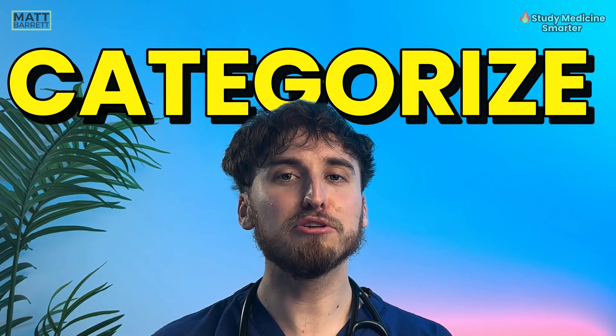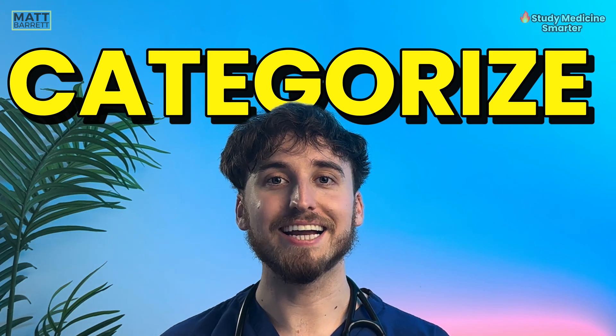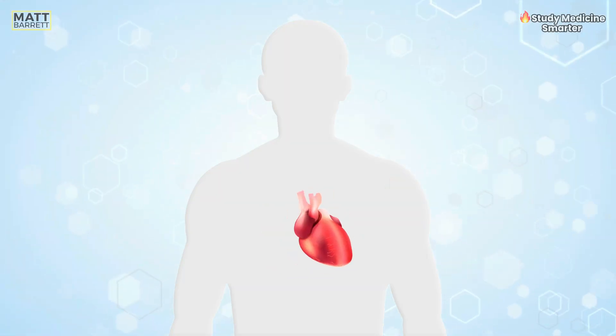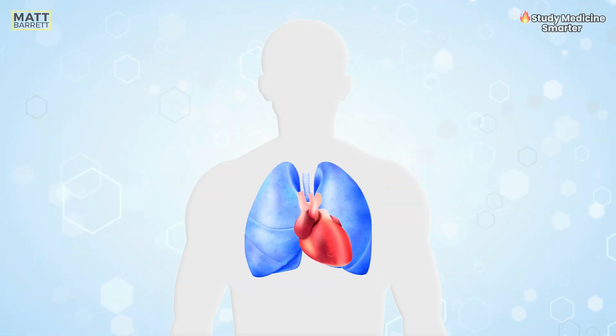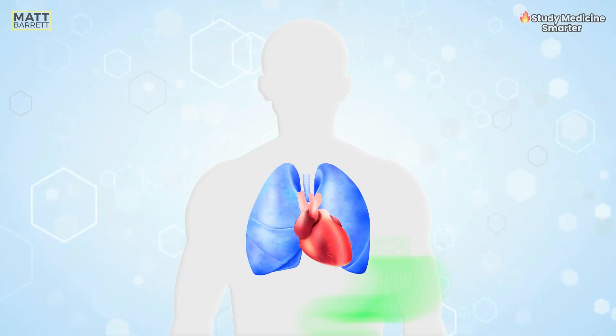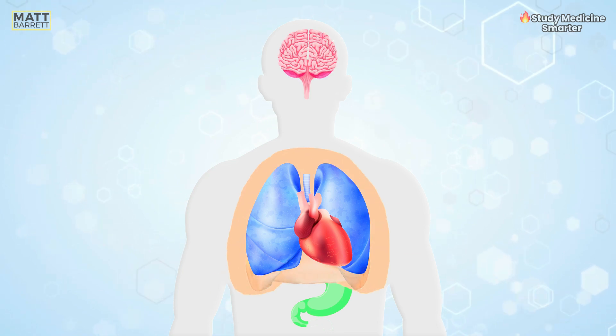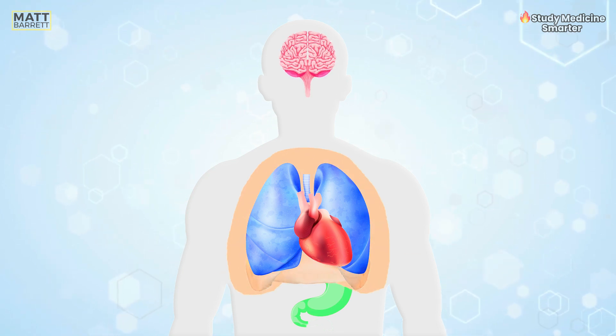The first step is to categorise — think of chest pain anatomically. The vast majority of cases will fall neatly into five categories: cardiovascular, respiratory, gastrointestinal, musculoskeletal, and then a miscellaneous. Let's go into each one at a time.